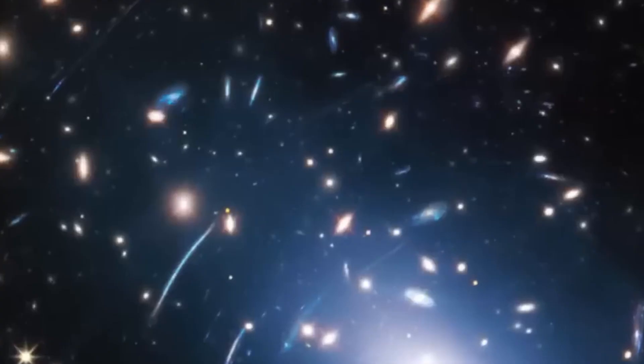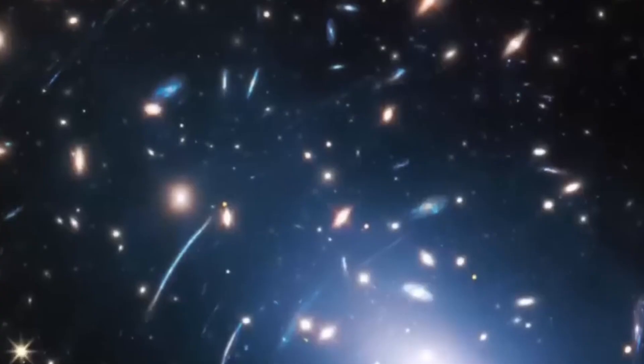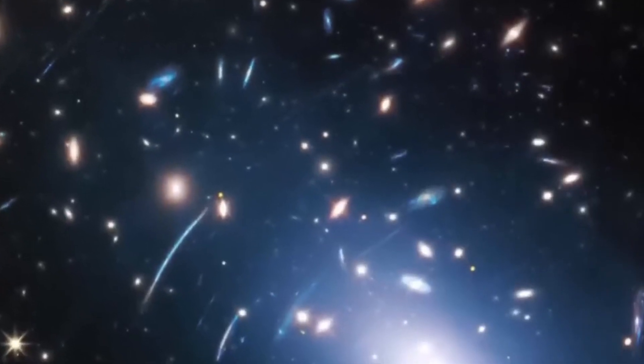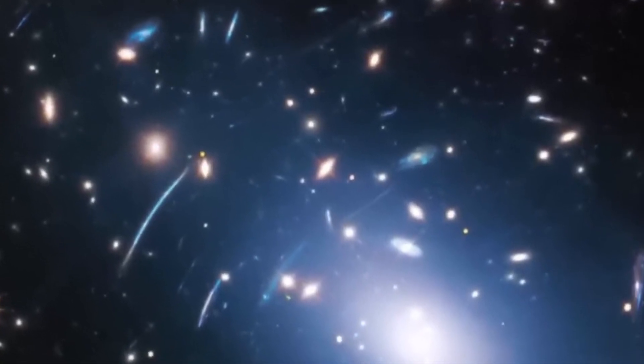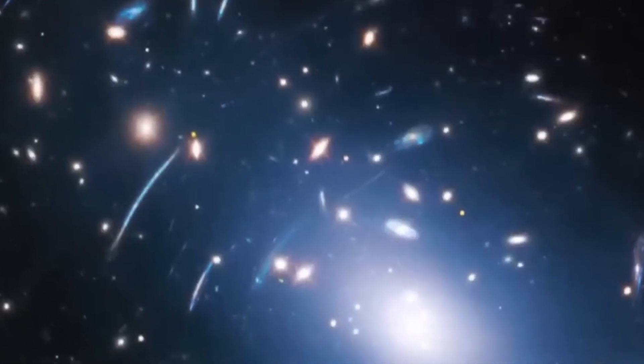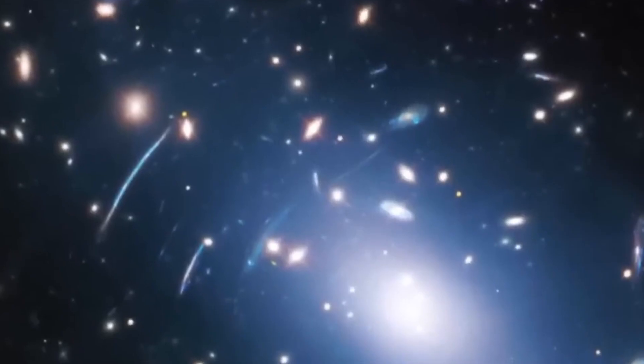What is incredible is that this photo only covers a patch of sky approximately the size of a grain of sand held at arm's length by someone on the ground. Compared to Hubble's view of the same area, Webb has brought those distant galaxies into sharp focus. Many objects that appeared as faint smudges to Hubble can now be seen in crisp view.